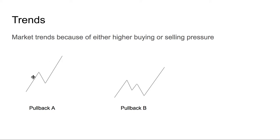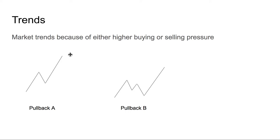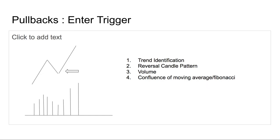In the complex pullback, all the sellers trying to short it get trapped, and all the buyers who got shaken out want to double down when the stock resumes. This creates a much larger move in the direction of the trend. Whether it's an upward or downward direction, you can flip the concept and apply it to the downside as well.